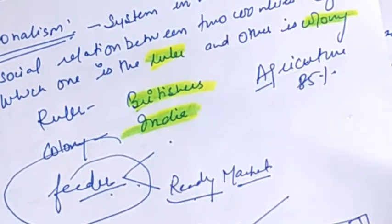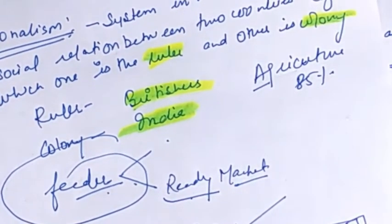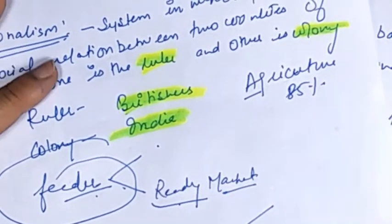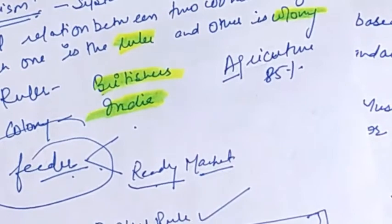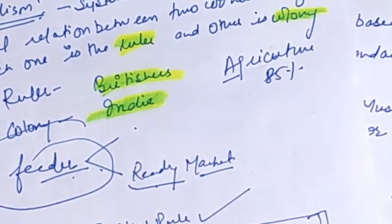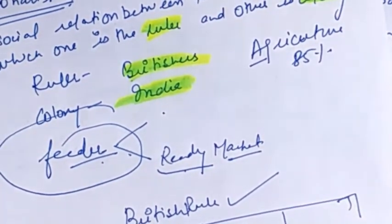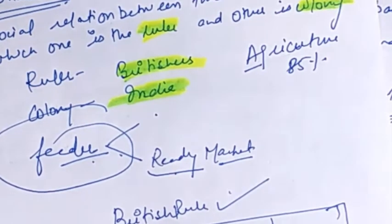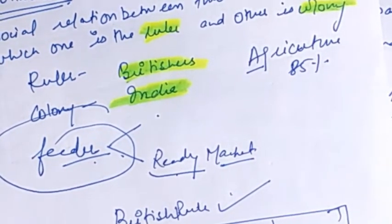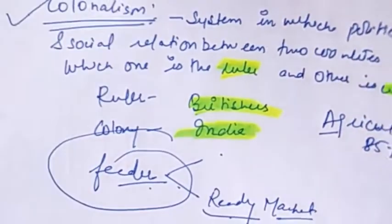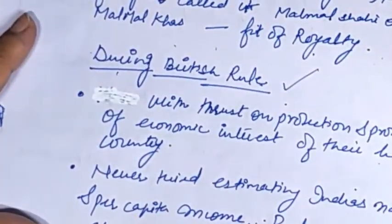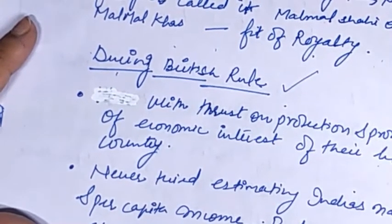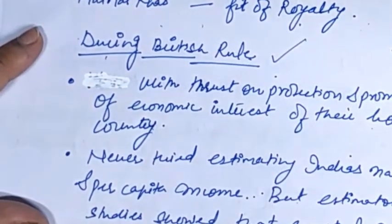When Britishers were ruling India, we can study their impact on agriculture, industries, demographic conditions such as birth rate and death rate, foreign trade direction and volume, occupational structure, and infrastructure. Today we will start with British rule and agriculture — what was the condition of agriculture during the British rule. When Britishers came to India, the Indian economy was an agrarian economy: 85% of the population was roughly involved in agriculture.